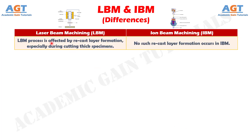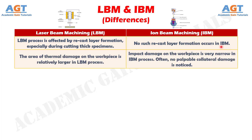Number 10. Laser beam machining process is affected by recast layer formation, especially during cutting thick specimens, whereas no such recast layer formation occurs in ion beam machining. Number 11. The area of thermal damage on the workpiece is relatively larger in laser beam machining process, whereas impact damage on the workpiece is very narrow in ion beam machining process. Often, no palpable collateral damage is noticed.